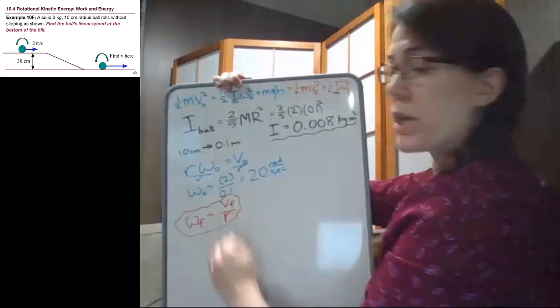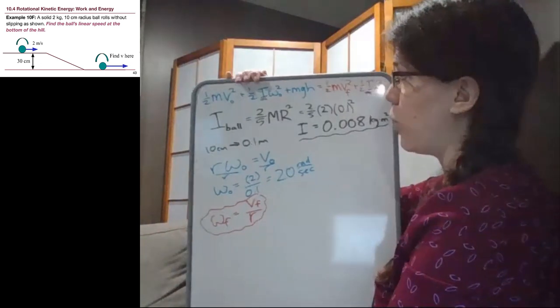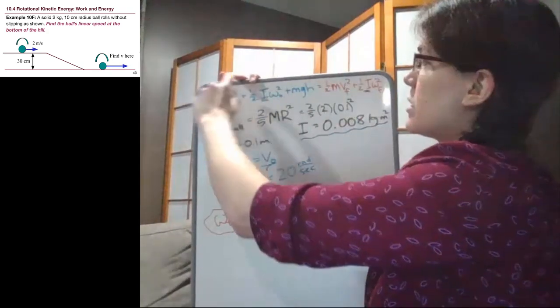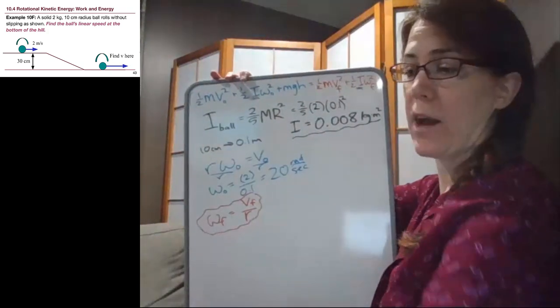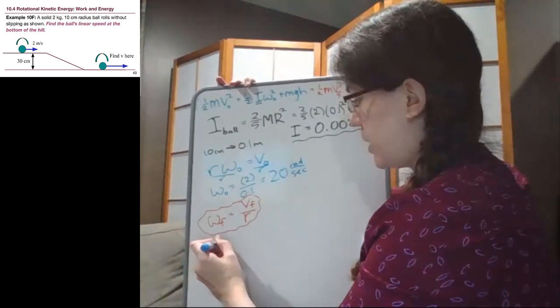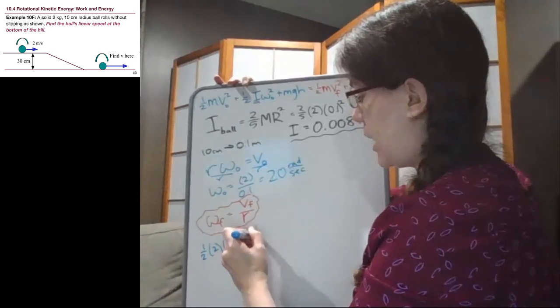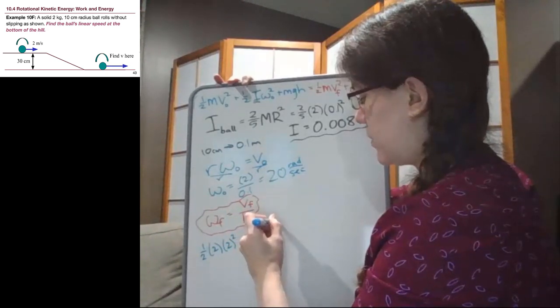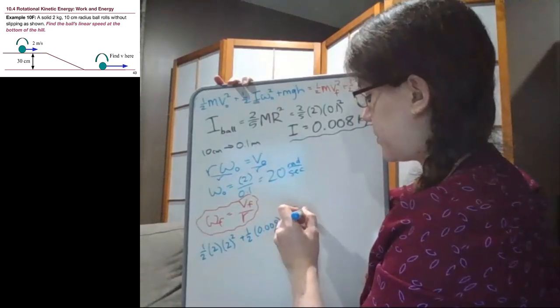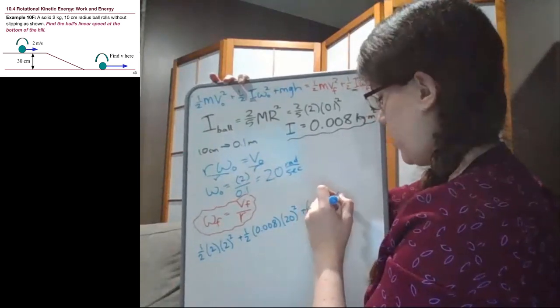So far what I've done is stuff that is really specific to chapter 10, the extra pieces we need to be aware of. Now we're going to plug in numbers. One half mass, mass is 2, times velocity 2 squared, plus one half i, i is 0.008, times the initial angular speed 20 squared, plus mgh, which is 2 times 9.8 times 0.3. That's the whole left side.